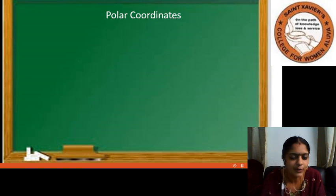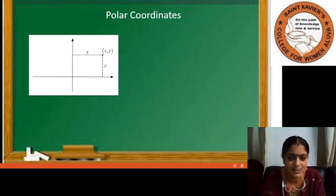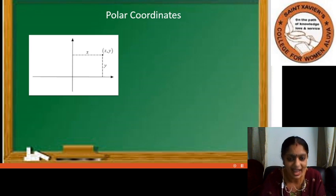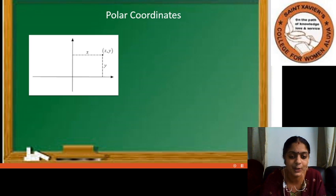You are all familiar with the concept of Cartesian coordinates. Any point in a plane can be represented as an ordered pair XY based on two perpendicular axes, which we call X-axis and Y-axis. X is the perpendicular distance from the Y-axis and Y is the perpendicular distance from the X-axis.